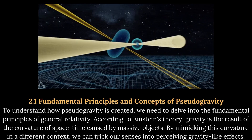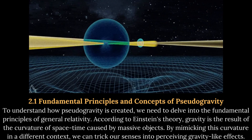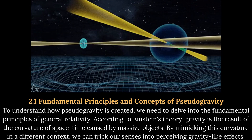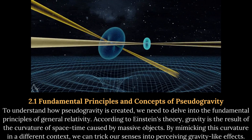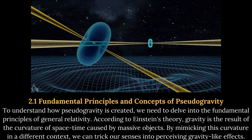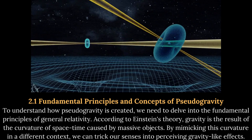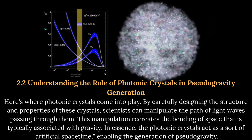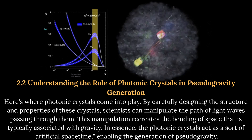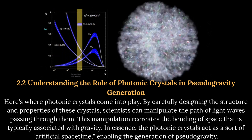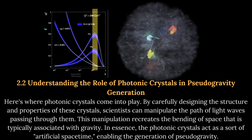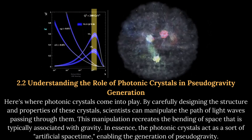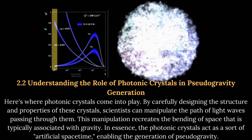Theoretical basis of creating pseudogravity with photonic crystals. To understand how pseudogravity is created, we need to delve into the fundamental principles of general relativity. According to Einstein's theory, gravity is the result of the curvature of spacetime caused by massive objects. By mimicking this curvature in a different context, we can trick our senses into perceiving gravity-like effects. By carefully designing the structure and properties of photonic crystals, scientists can manipulate the path of light waves passing through them, recreating the bending of space typically associated with gravity. In essence, the photonic crystals act as a sort of artificial spacetime, enabling the generation of pseudogravity.